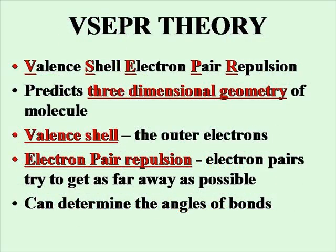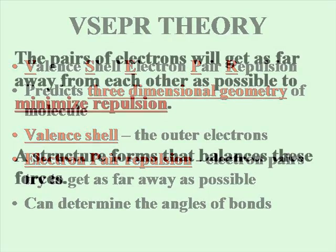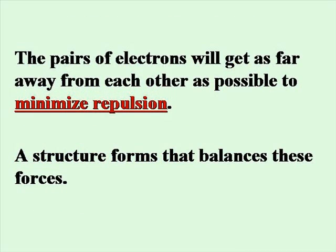The Valence Shell Electron Pair Repulsion model predicts the three-dimensional geometry. The valence shell contains the outer electrons that are bonding. The electron pairs are going to repel each other, so they arrange themselves around the central atom to get as far away as possible. This arrangement determines the angles of bonds and the geometry of the molecule. The pairs of electrons will get as far away from each other as possible while still being attracted to the nucleus, and a structure forms that balances all these forces.